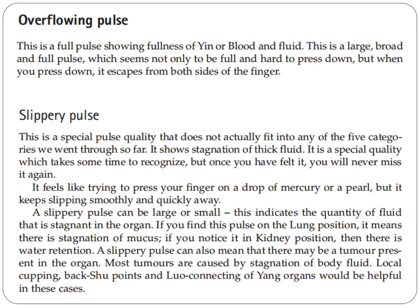A slippery pulse can be large or small, indicating the quantity of fluid that is stagnant in the organ. A slippery pulse on the lung position means there is stagnation of mucus; in the kidney position, it indicates water retention. A slippery pulse can also mean there may be a tumor present, as most tumors are caused by stagnation of body fluid. Local cupping, bakshu points, and luo-connecting of yang organs would be helpful in these cases.